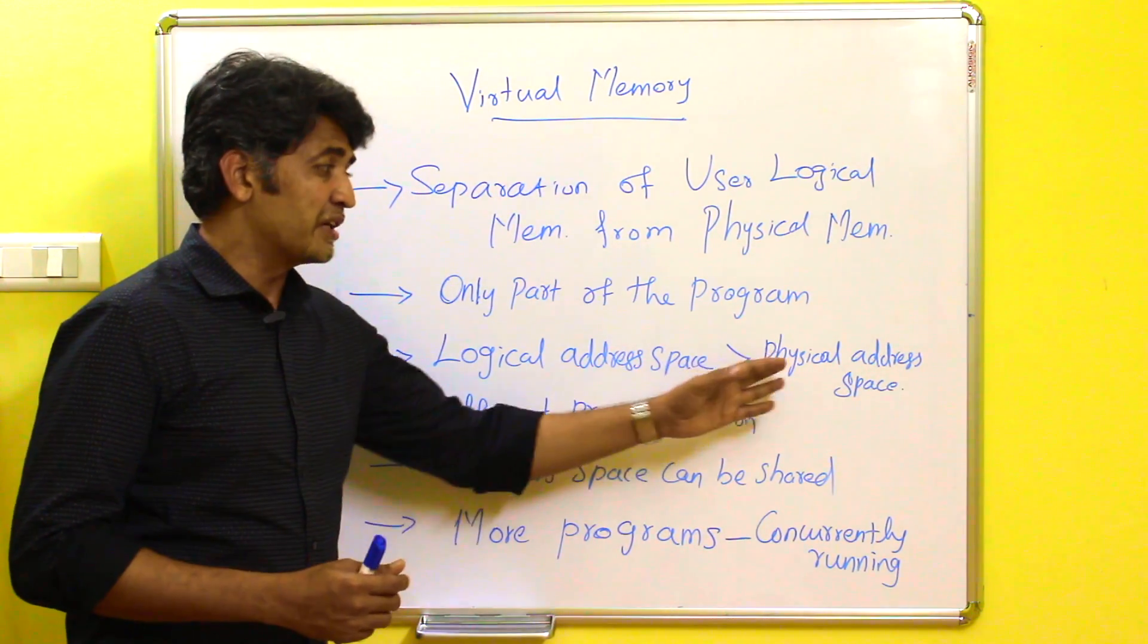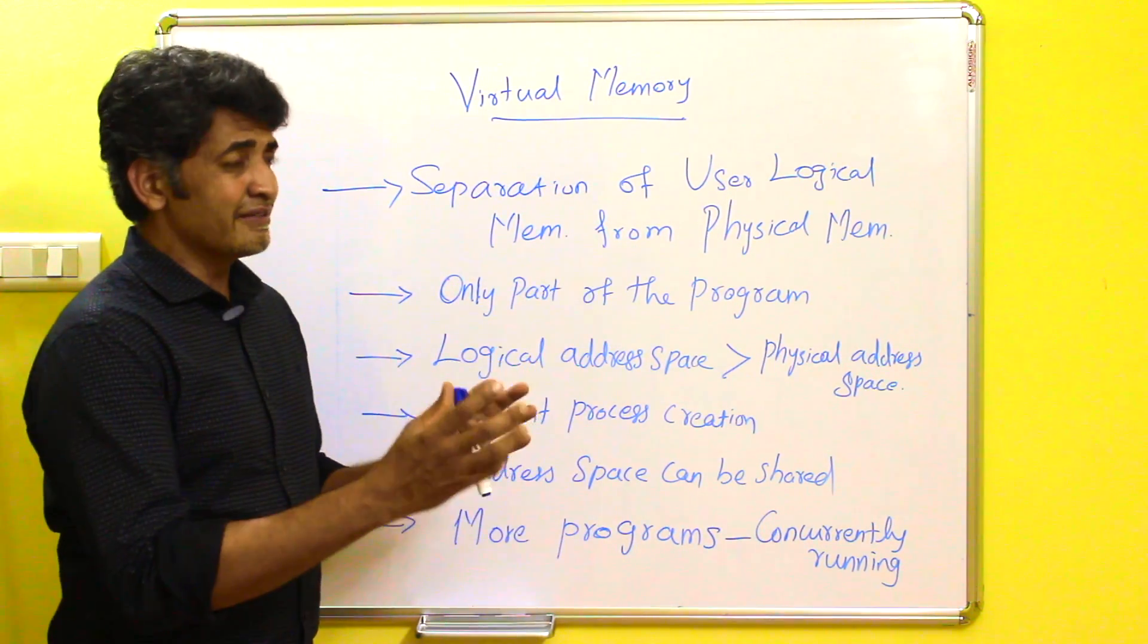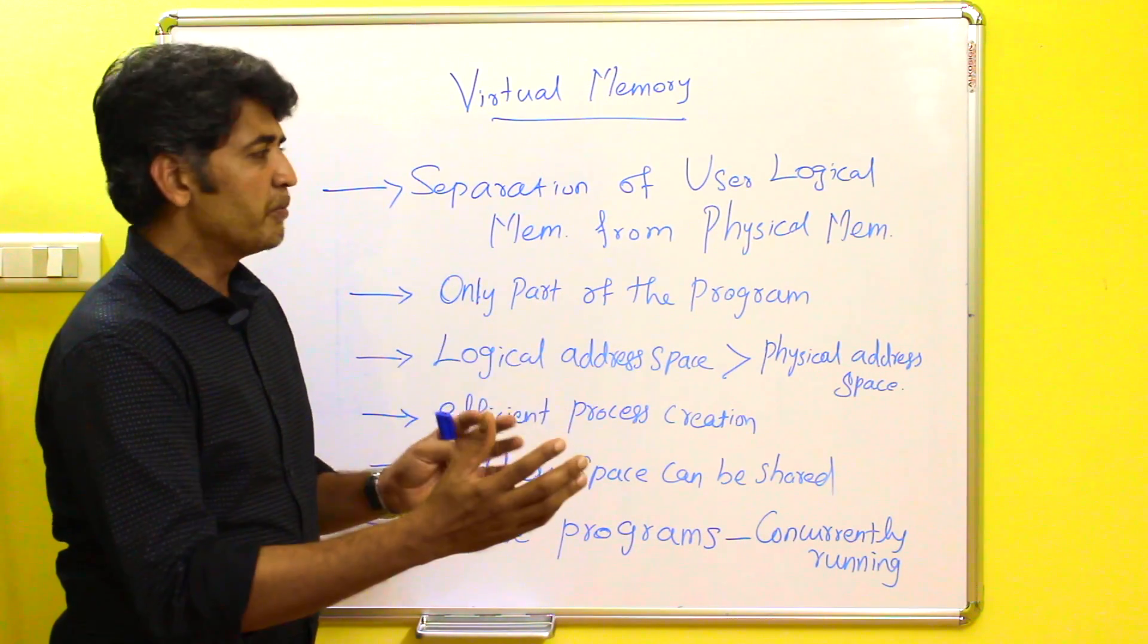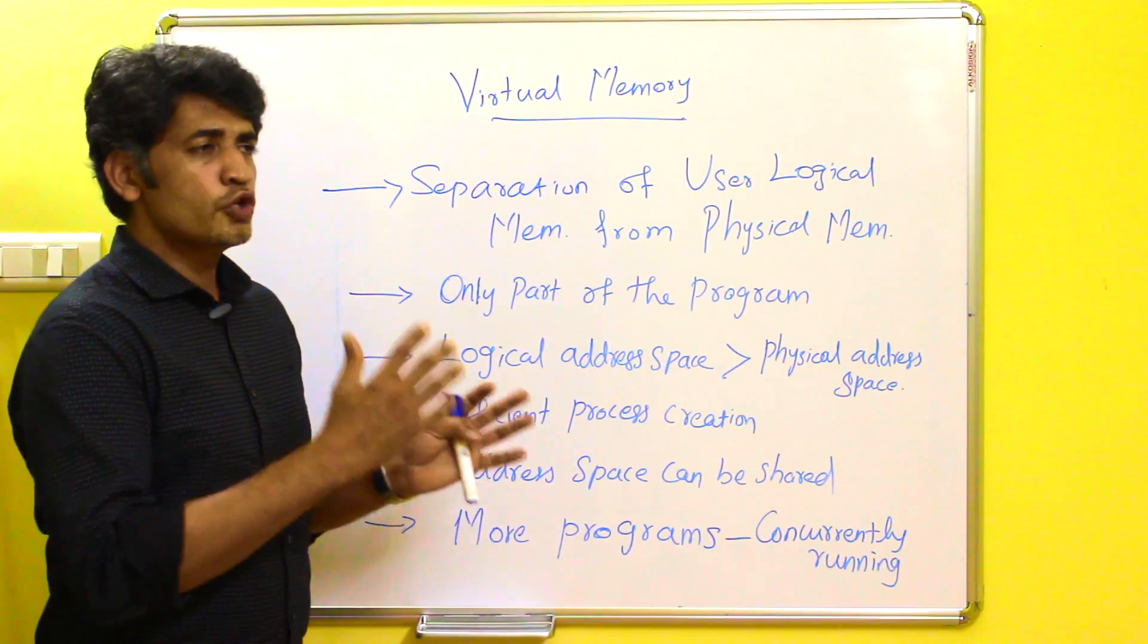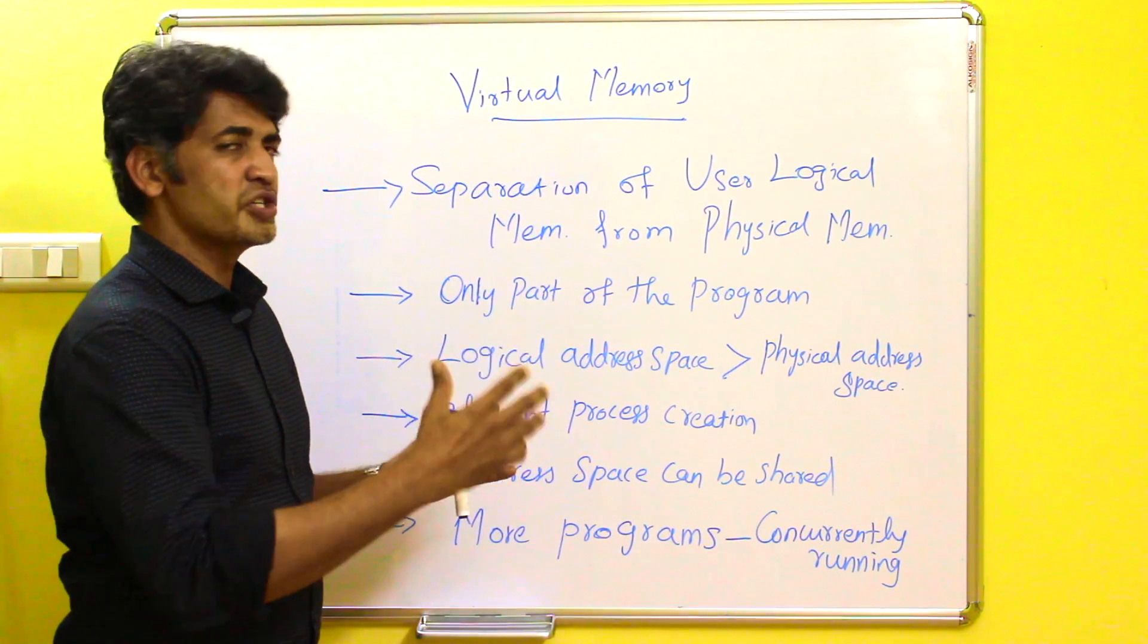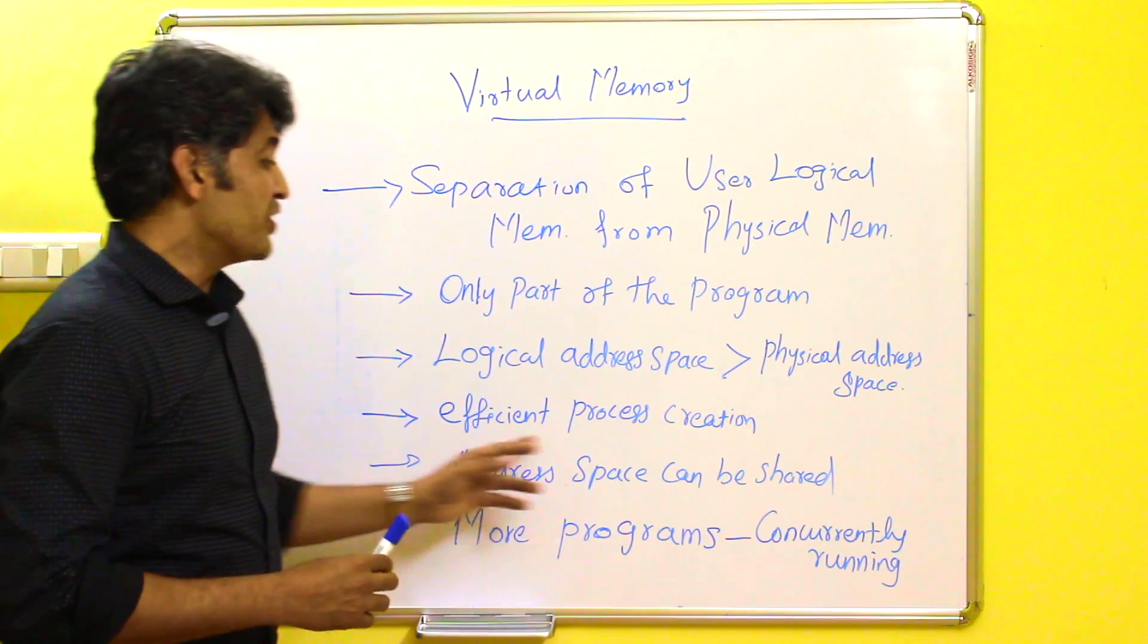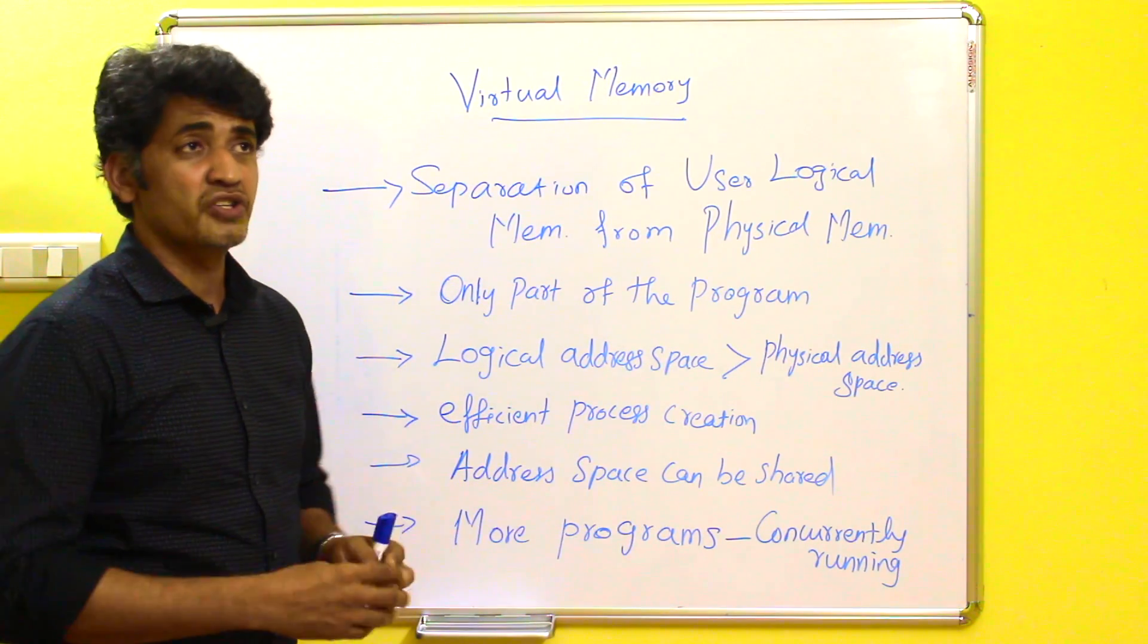Logical address space is greater than the physical address space because here, only the required information to start the process will be there in the physical memory. All other information will be there in the secondary disk, that is the temporary disk.